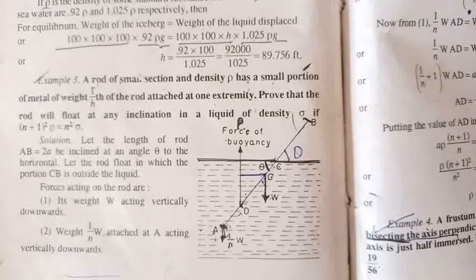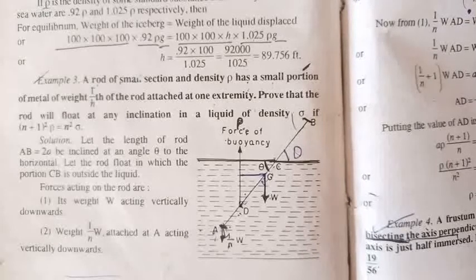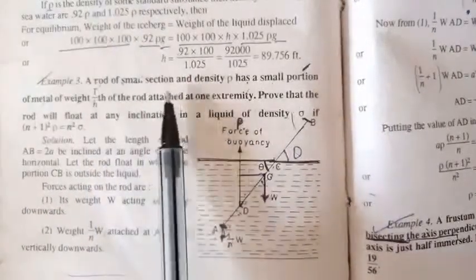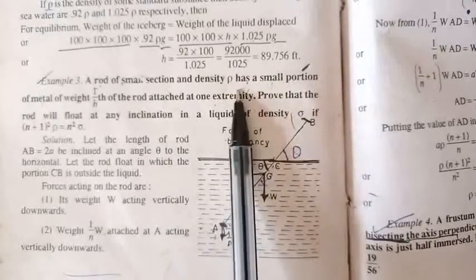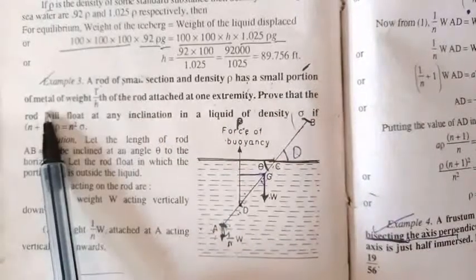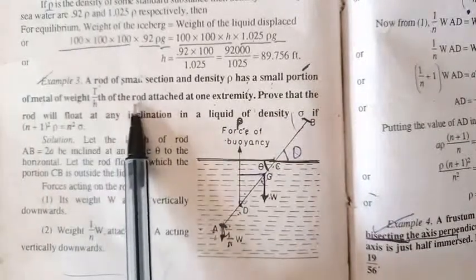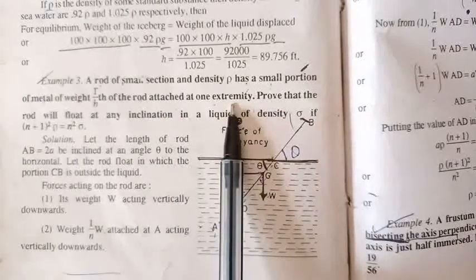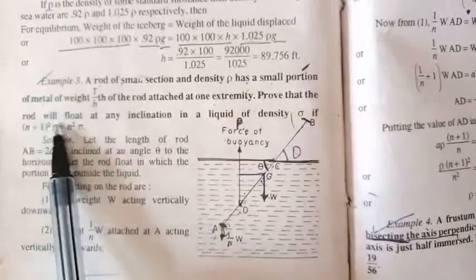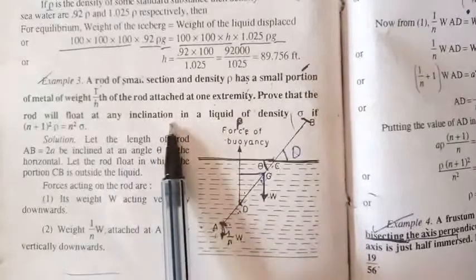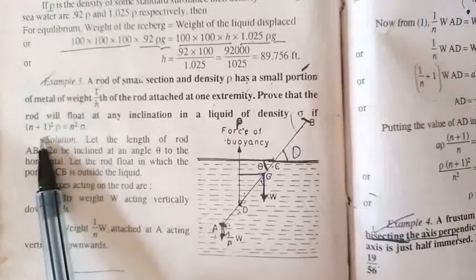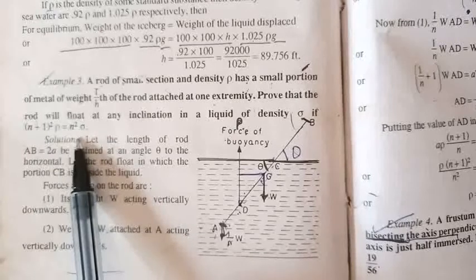Good morning students. We had started the chapter on equilibrium of floating bodies and discussed two examples. Our next example: a rod of small cross-section and density has a small portion of metal of weight 1/n-th of the weight of the rod attached at one extremity. We have to prove that the rod will float at any inclination in a liquid of density sigma if (n+1)² times rho equals n² times sigma.